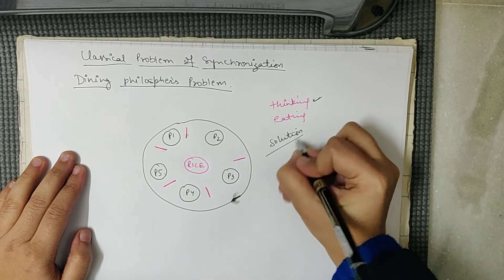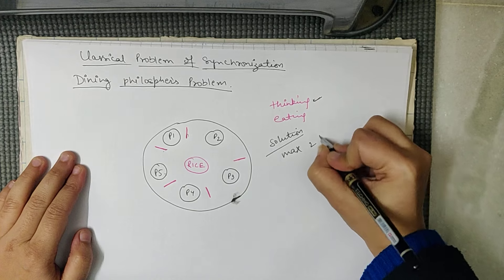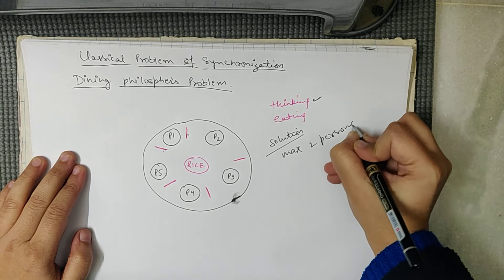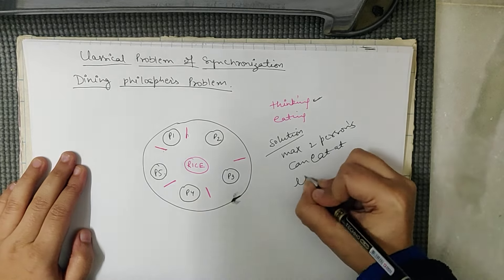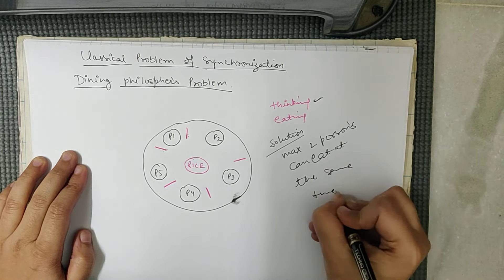Maximum two persons can eat at the same time. Maximum two persons can eat at the same time, clear.